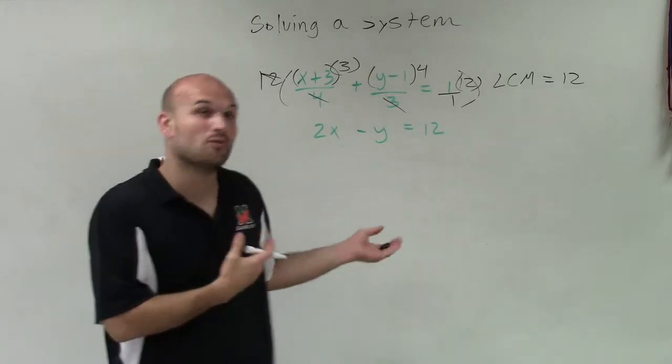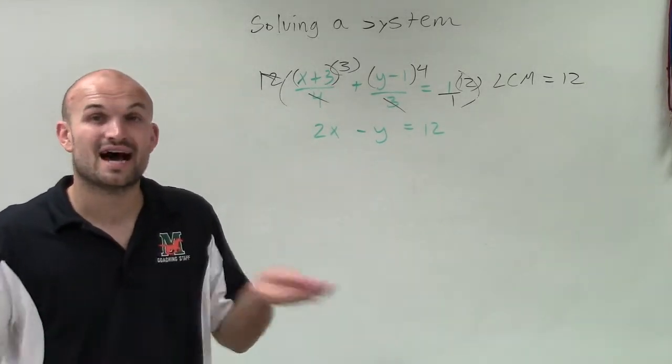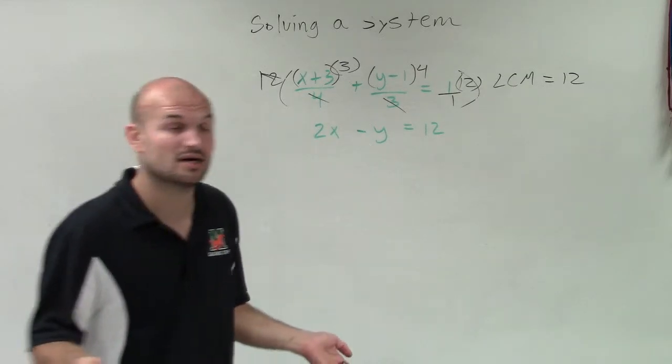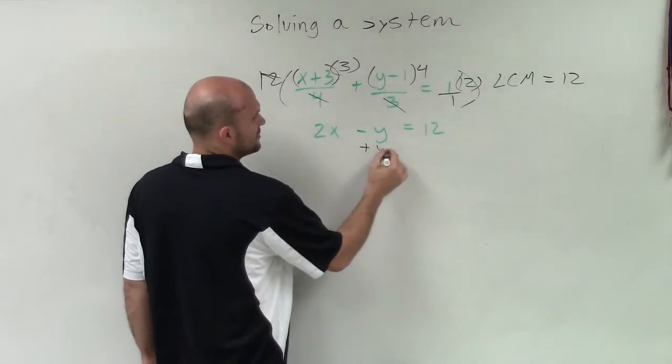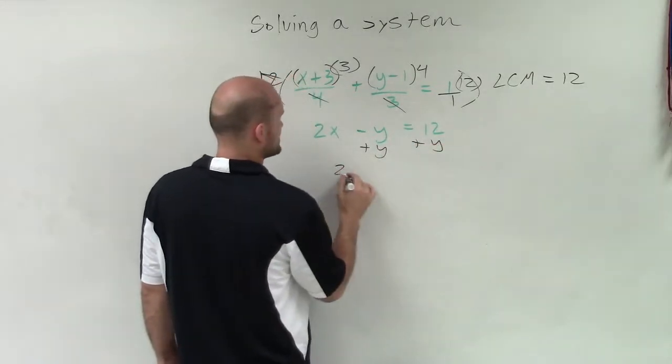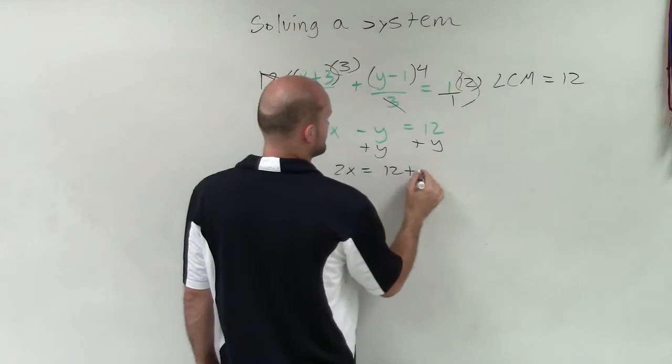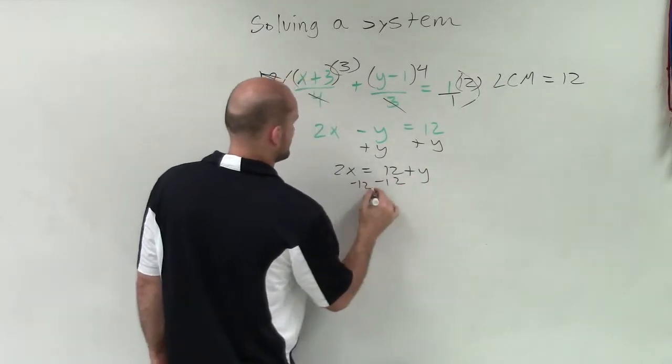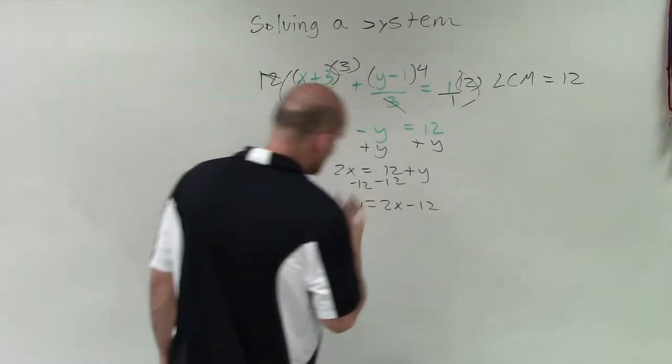Now, for this equation, I like that my y is only being multiplied as a coefficient of negative 1. That means I'm probably going to want to use substitution. So what I'll do with this one is solve for y. So I get 2x equals 12 plus y. Subtract the 12. I get y equals 2x minus 12.